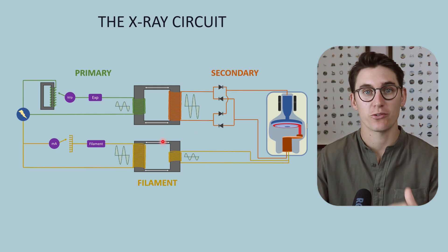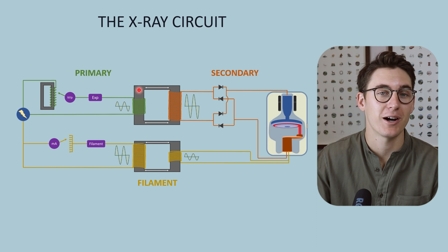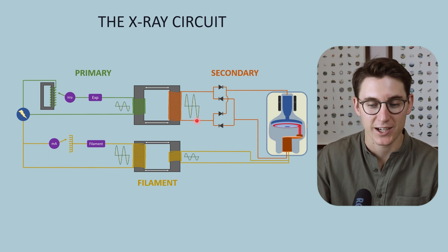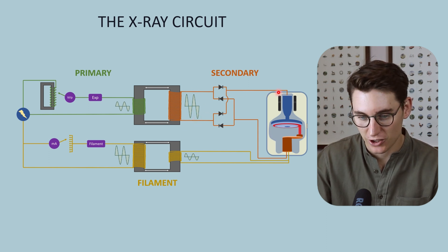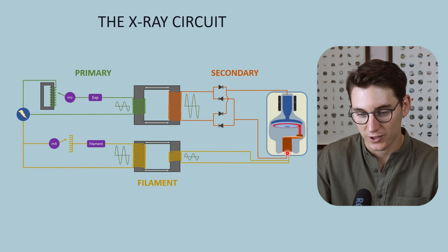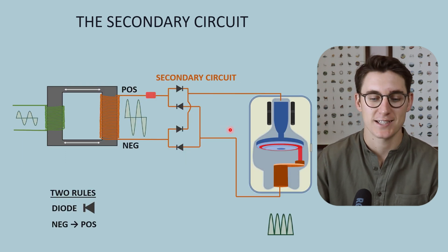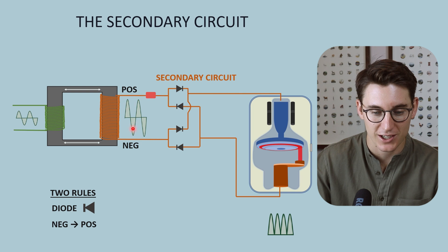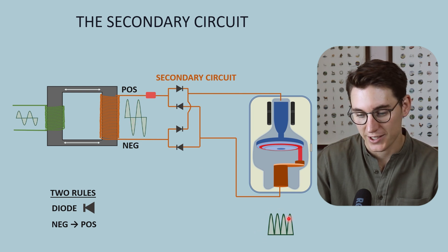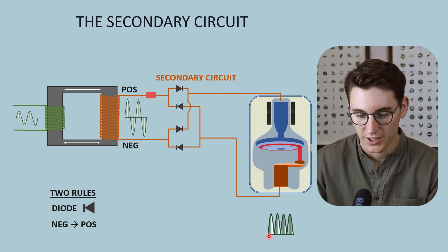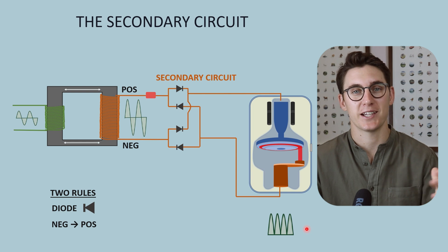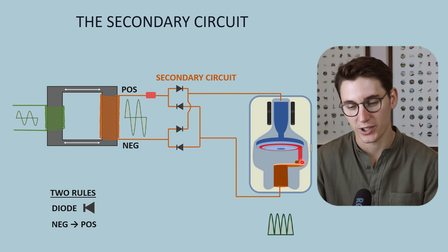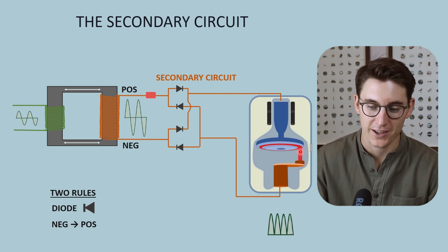So how does the secondary circuit fit into our whole circuit? The electricity comes from our primary circuit, is stepped up through the process of step-up transformation, and a current is induced in our secondary circuit. This secondary circuit then supplies both our anode and our cathode. The primary function of the secondary circuit is to convert this alternating current into direct current, where current is flowing in one direction. That direct current is still fluctuating, and we need to use a process of generation to smooth out this current and ensure a steady flow of electrons from our cathode to our anode.